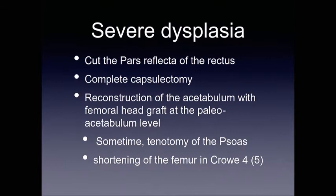In severe dysplasia, I would do a classic greater approach. Maybe I would cut the path reflector to have better access to the upper acetabulum. Complete capsulotomy, to me, most of the time is mandatory, but not always. I do the reconstruction of the acetabulum at the level of the paleoacetabulum and never elsewhere. Sometimes you have to do tenotomy of the sartorius, and sometimes, in a really big CRO 4, you have to do a shortening of the femur.